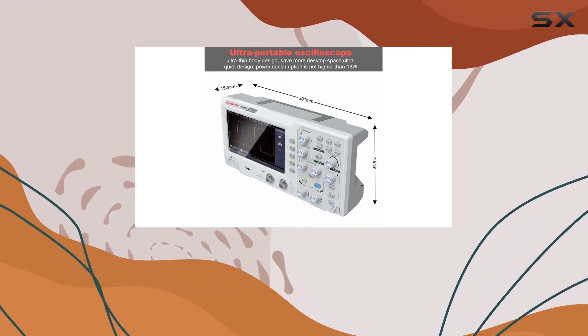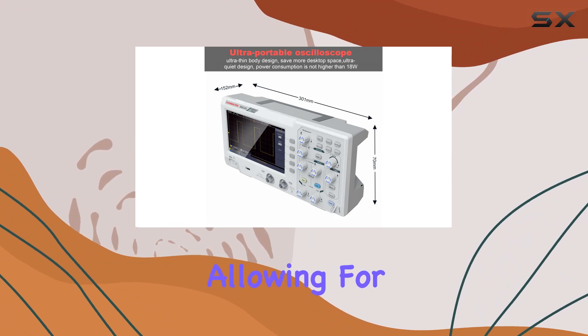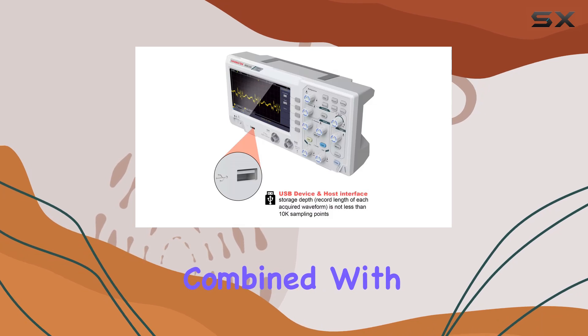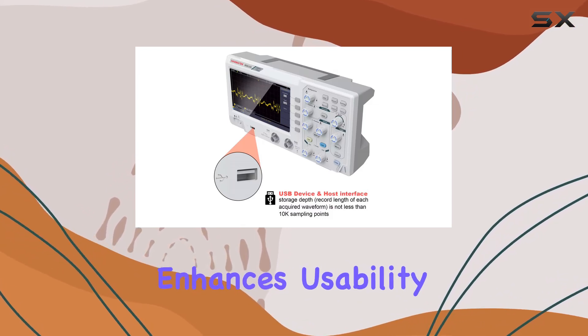The cursor measurement function offers flexibility with four modes, allowing for precise voltage and time measurements. The automatic range function, combined with horizontal and vertical tracking, enhances usability.